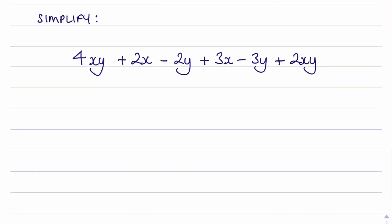On this final question we've got multiple different terms. We're going to look for the like terms. Which term is like the xy term here? It is this one over here, the plus 2xy. So we've got 4xy and 2xy, which gives us 6xy.